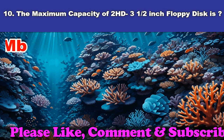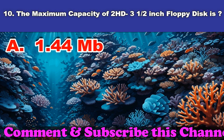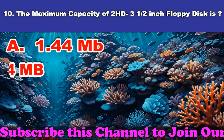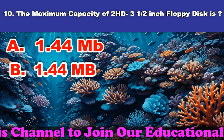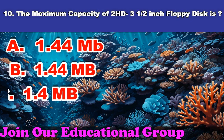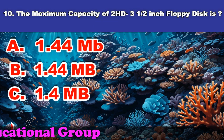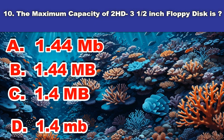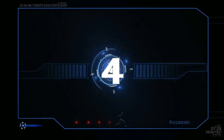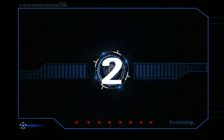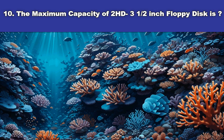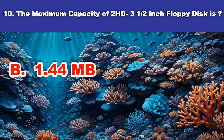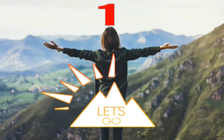Tenth question: The maximum capacity of two HD 3.5-inch floppy disks is? A. 1.44 megabits. B. 1.44 megabytes. C. 1.4 megabytes. D. 1.4 MB. And the answer is 1.44 megabytes.